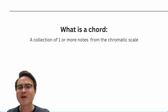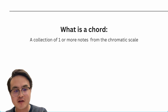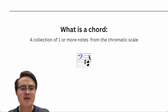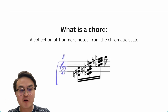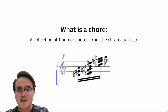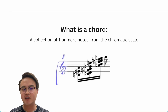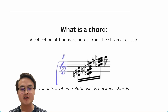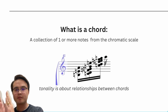A chord is one or more notes from the chromatic scale. Chords like C major, but this also includes other collections of notes that maybe don't sound like chords — they just sound kind of like dissonant globs of sound. These are still chords; just because it doesn't sound musical or harmonious doesn't mean it's not a chord, because that quality of being tonal, of being harmonious, is more about the relationship between chords.